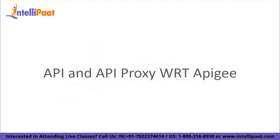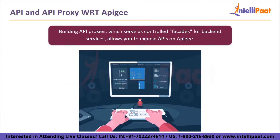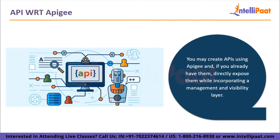Let's move on to understanding APIs and API proxies with respect to Apigee. You can quickly and easily create RESTful APIs using Apigee that app developers can use. Building API proxies, which serve as controlled facades for backend services, allows you to expose APIs on Apigee. You may create APIs using Apigee and if you already have them, directly expose them while incorporating a management and visibility layer. You can also provide HTTP-enabled services using Apigee as APIs such as SOA-based web services. Without using a backend service, Apigee also enables you to develop apps hosted on the API services platform, which can be created in Java and JavaScript.